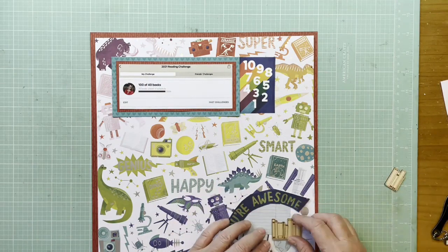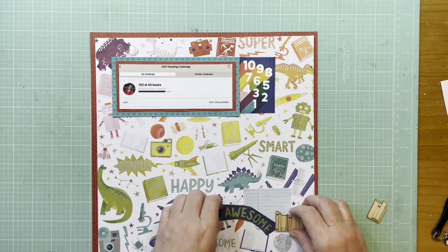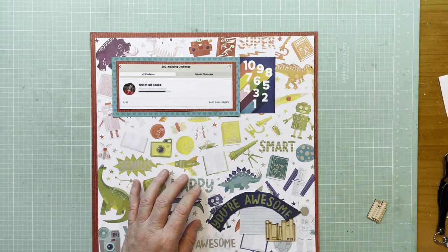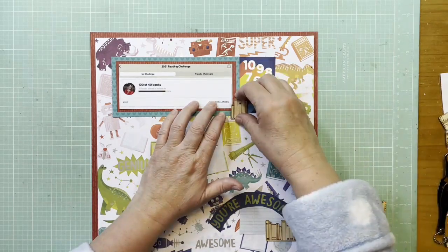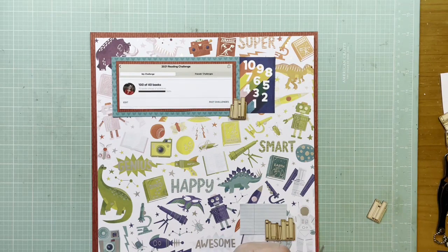Then I added that little die cut that says 10 9 8 numbers. This is all about the amount of books. When I reached 100 books last year, which I'd never done before, didn't intend to do it, but I did. So let me go through the layout and talk about that.